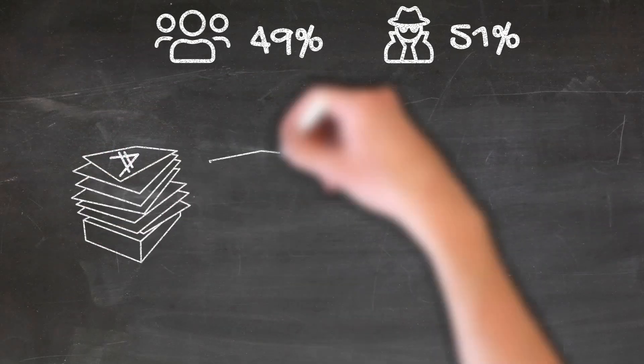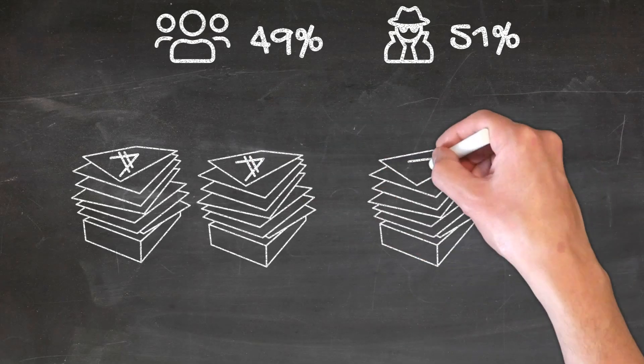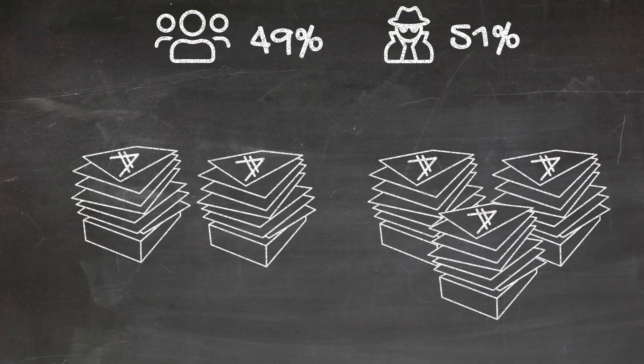In a proof-of-stake system like Cardano, it's all about stake. You have to own more than 50% of the staked ADA to have the chance to create the majority of blocks and successfully perform an attack.